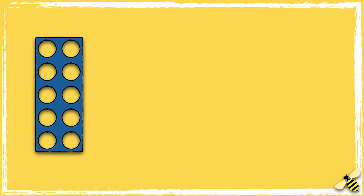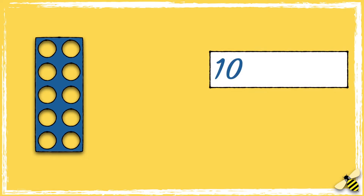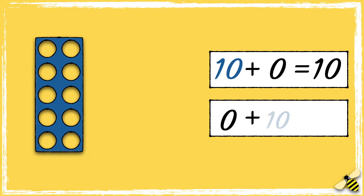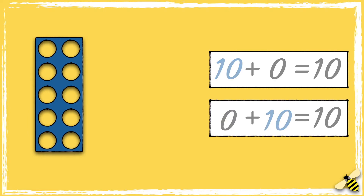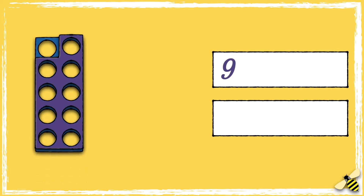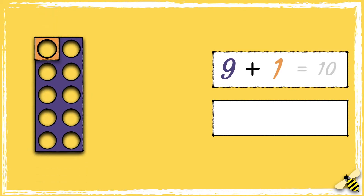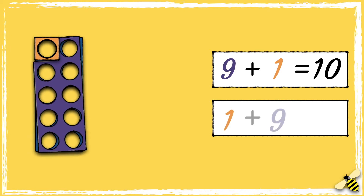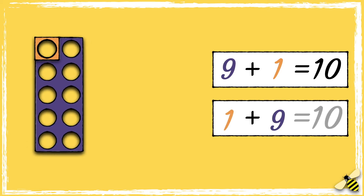Let's see what numicon pieces add together to make 10. We'll start with 10 add 0 equals 10. Or we could say 0 add 10 equals 10. 9 add 1 equals 10. We could also say that 1 add 9 equals 10.